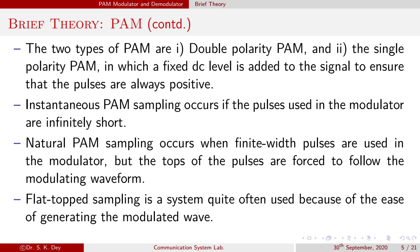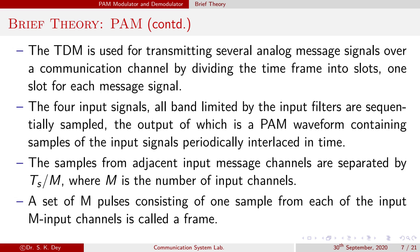Instantaneous PAM sampling occurs if the pulses used in the modulator are infinitely short. Natural PAM sampling occurs when finite width pulses are used in the modulator but the top of the pulses are forced to follow the modulating waveform. Flat top sampling is quite often used in systems because of the ease of gathering of the modulating wave.